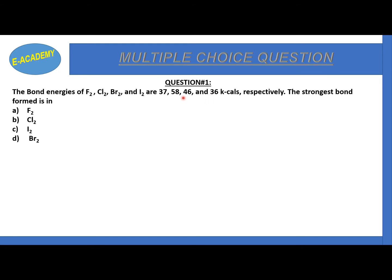Now chlorine is the strongest bond. The bond energy is directly proportional to the bond strength, so the strongest bond is chlorine.